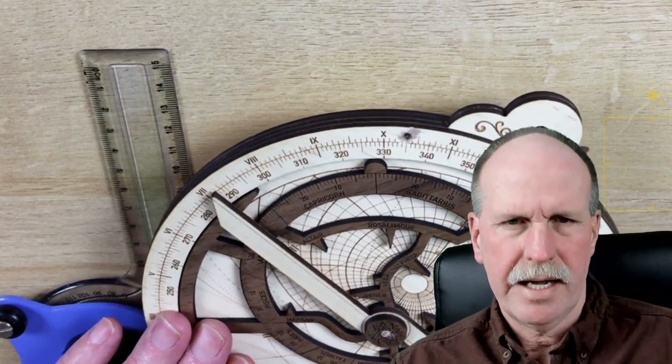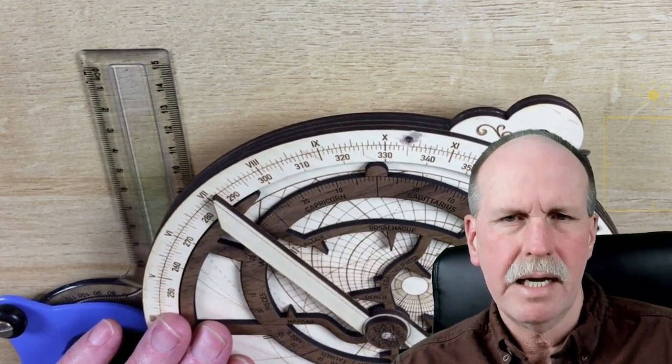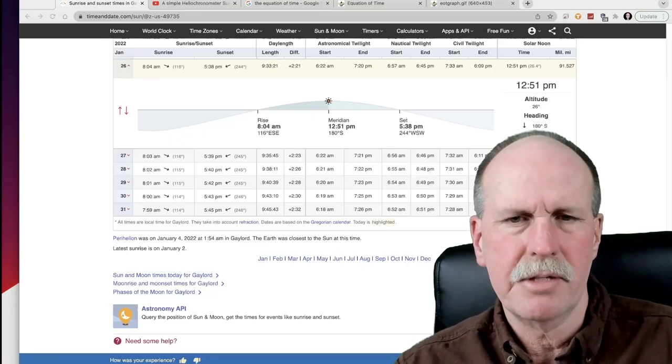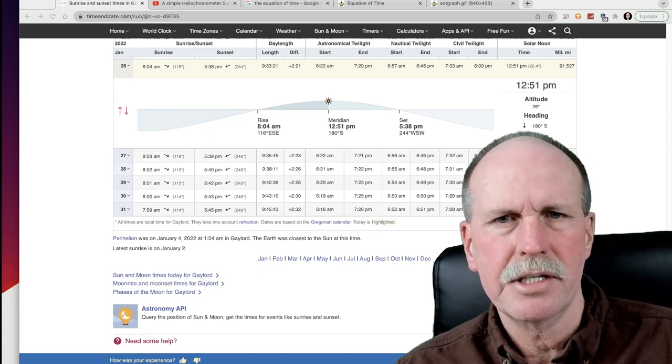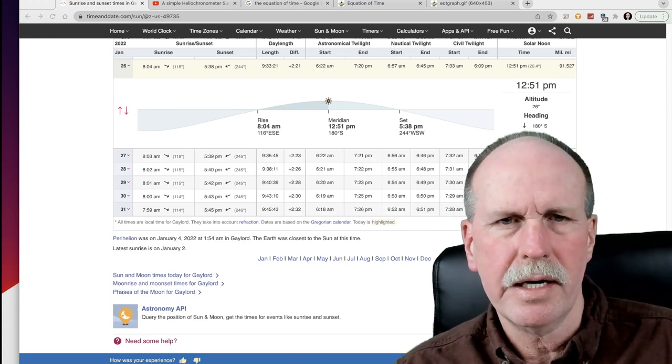Now we add the 51 minute correction to that and that comes up to 8:01. Let's see what time dawn is in Gaylord, Michigan. It's 8:04. We're three minutes off. That may have been a reading error.